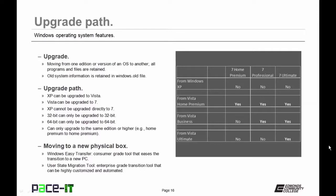If you're moving to a new physical PC, consider Windows Easy Transfer — a consumer-grade tool that pulls information from the old machine and deposits it on the new one. For the enterprise, Microsoft introduced the User State Migration Tool, a great tool that can highly automate the transition from one physical machine to another.